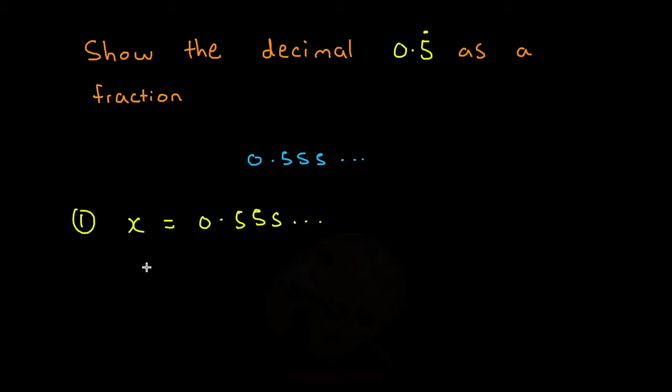The next step would be to multiply x, which is 0.555, by 10. So we get 10x is equal to 5.555 and so on, right, because we're just shifting everything to the left.